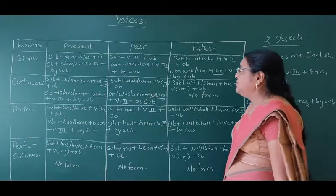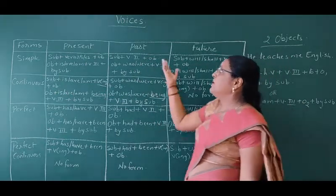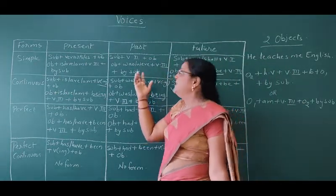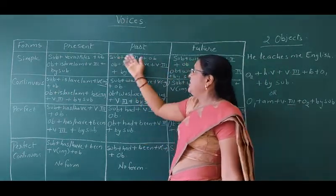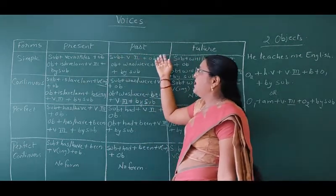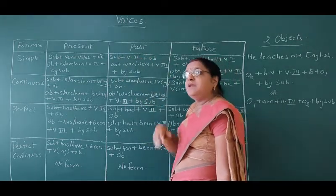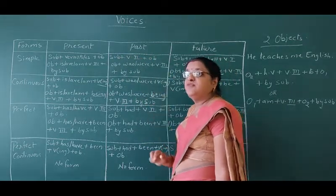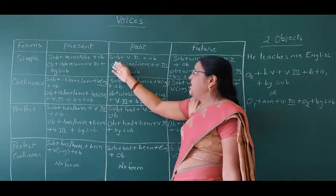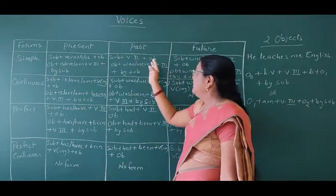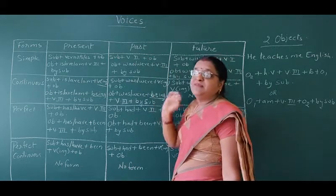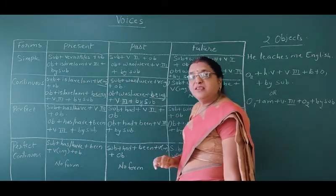Now let's move on to the simple past tense. In active voice: subject plus the second form of the verb plus object. In passive voice, the object becomes the subject, followed by 'was' or 'were' plus the third form of the verb, plus 'by' and the subject.